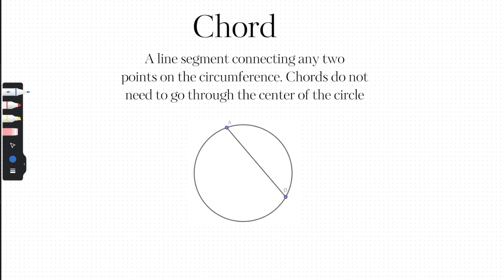Another term is called the chord — a line segment connecting any two points on the circumference. Chords do not need to go through the center of the circle. This is called chord AB because point A starts on one side of the circle and goes all the way to the other end, but doesn't necessarily go through the center. Importantly, the diameter — which does go through the center — is technically also a chord, but chords don't have to go through the center like the diameter does.